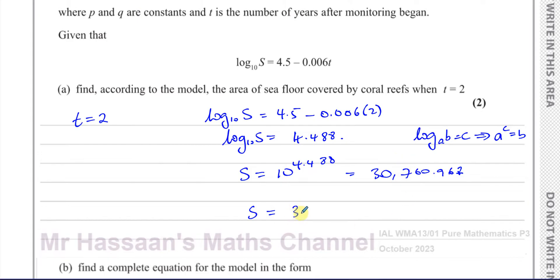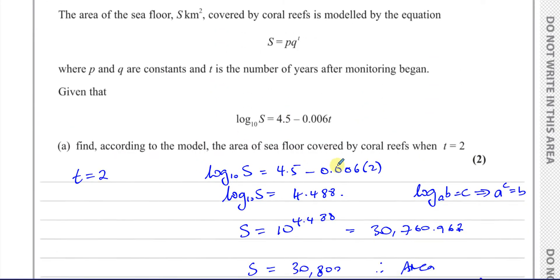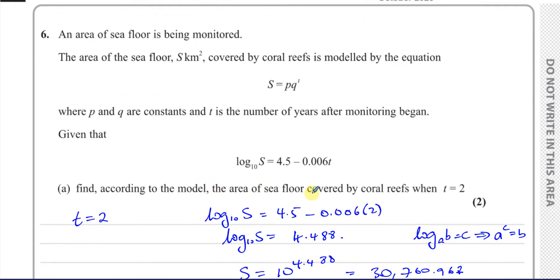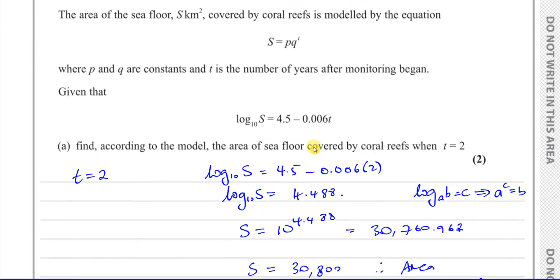To three significant figures, 30,800. That is the area in kilometers squared. Therefore the area is 30,800 square kilometers. It's best for you to write, if they said find the value of S, you'd leave it as 30,800. Because it says find according to the model the area of the seafloor covered, you would therefore say the area is 30,800 kilometers squared. That's part A.